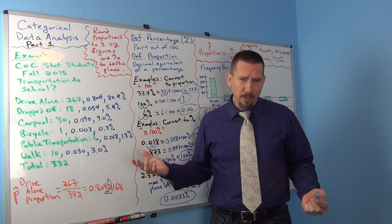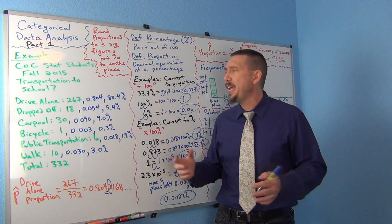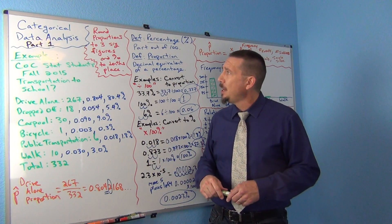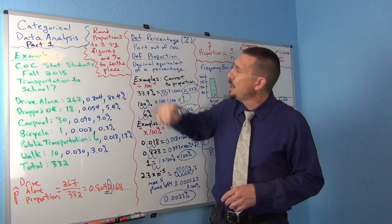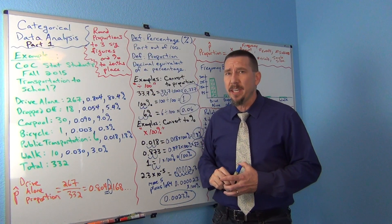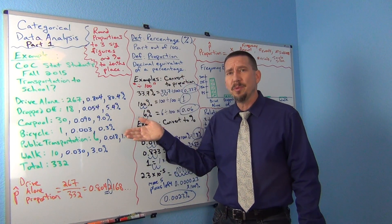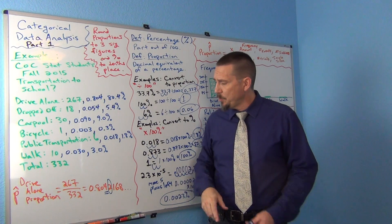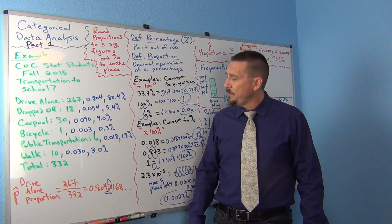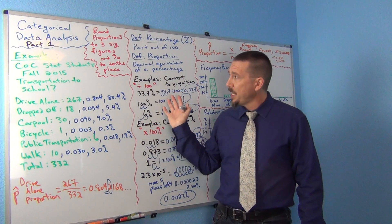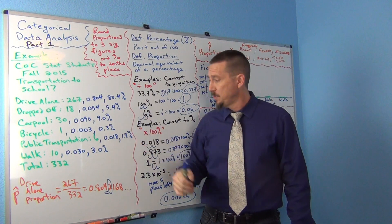Which brings us to sort of rounding rules. Different teachers may have different rounding rules. A common rounding rule I tend to use for categorical data is I round my proportions to three significant figures, which is the thousandths place or the third number to the right of the decimal. And then if you convert that back into a percentage, the percentage will actually be at the tenths place, which is one number to the right of the decimal.